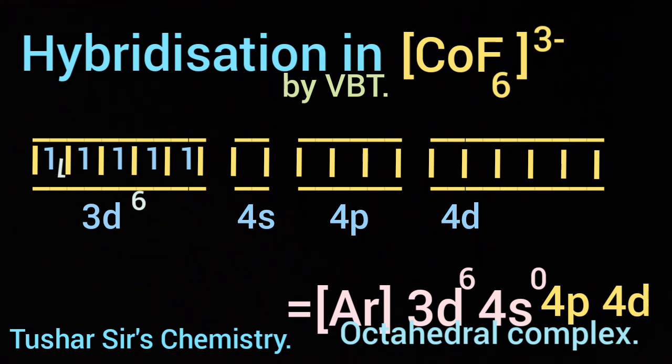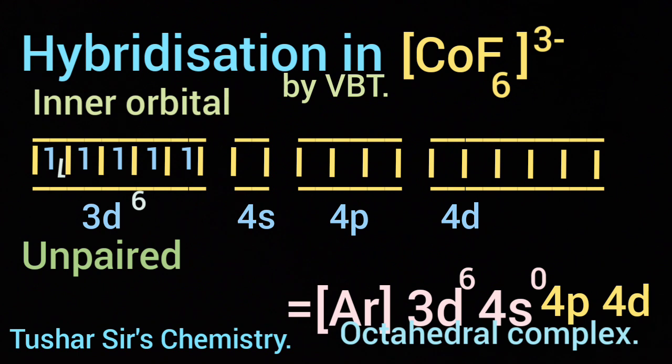As you know, F⁻ is a weak ligand. Then the electrons present in 3d inner orbital cannot get paired up. They remain as unpaired electrons. As there are 6 F⁻ ions...